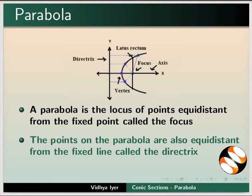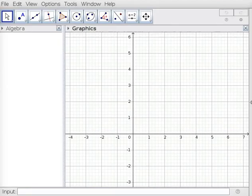The axis of symmetry is perpendicular to the directrix and passes through the focus and vertex. The latus rectum passes through the focus and is perpendicular to the axis of symmetry. Let us construct a parabola in GeoGebra.